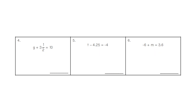For number 4, g plus 3½ equals 10. Positive and negatives are opposites; multiplying and dividing are opposites. So 3½ is on the left, 10 is on the right. I take my number away from the variable and point it to the other number. Instead of plus 3½, we do the opposite — we do minus 3½. 10 minus 3½ on the calculator gets us 6½.